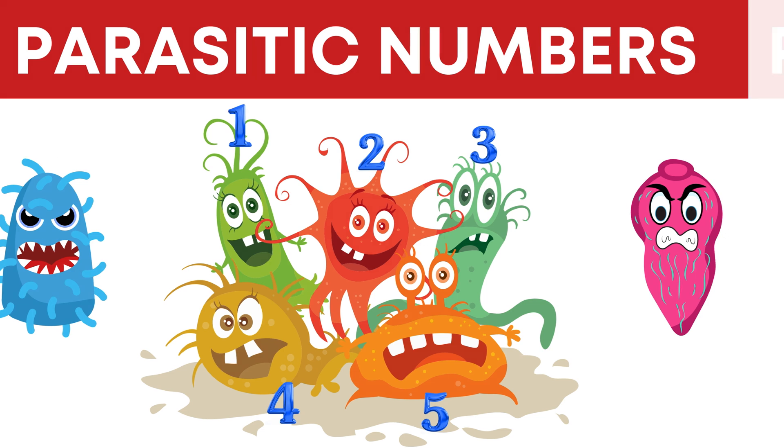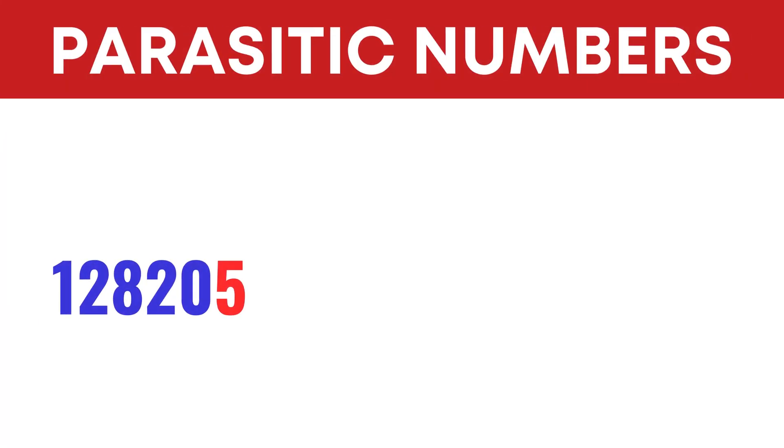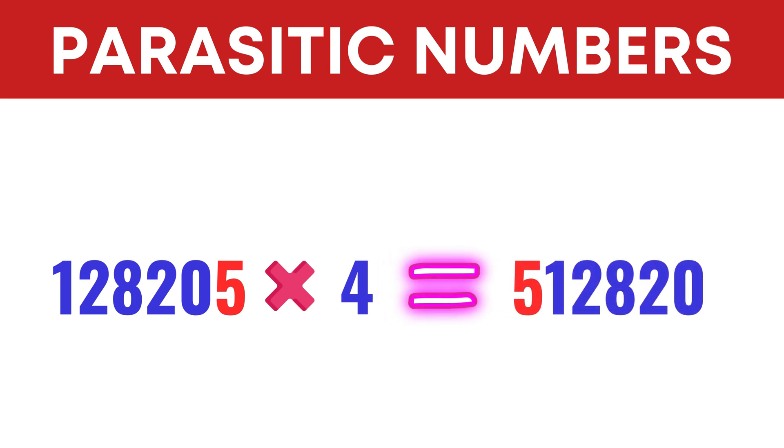What exactly are parasitic numbers? Take the number 128205 and multiply it by the number 4. 4 multiplied by 128205 we get 512820. Compare the digits of the original number with the result. We have the same digits in both the numbers. Since we multiplied the number 128205 by the number 4, 128205 is called 4-parasitic.